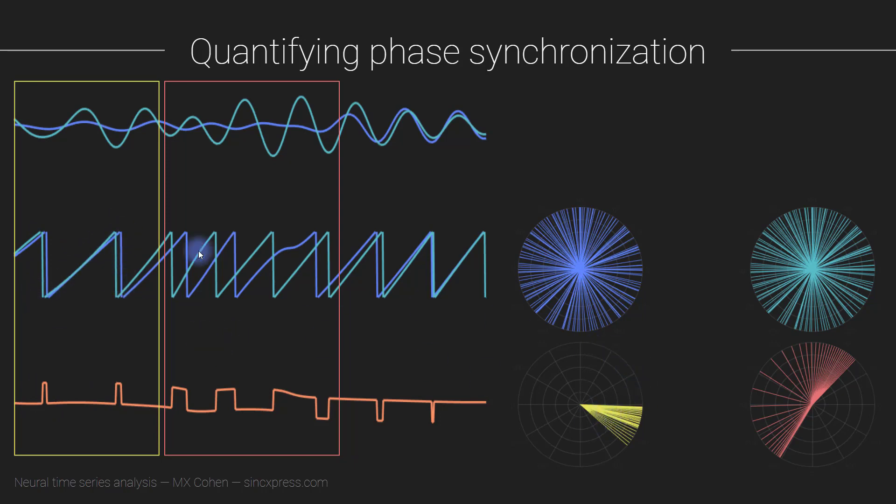In this time window here, when we can visually confirm that there is weak synchronization, the phase angle differences in this time window are more uniformly distributed. Not totally uniformly distributed, but certainly you see that the distribution of phase angles is much wider here than it is here. And I'm sure you see where this is going.